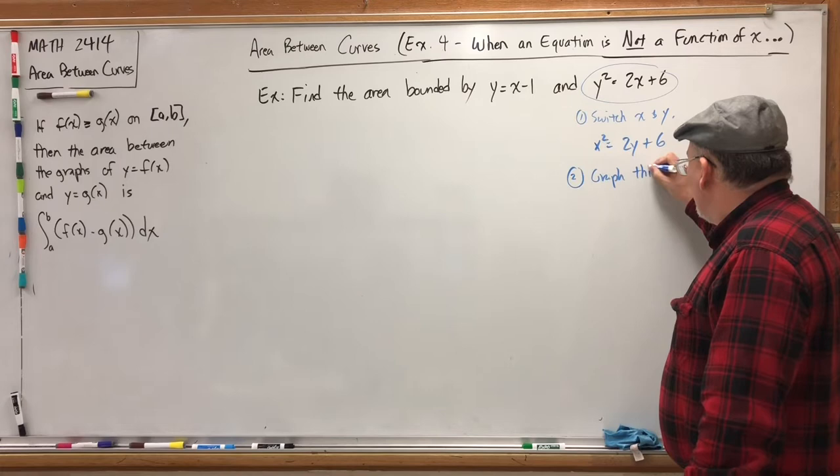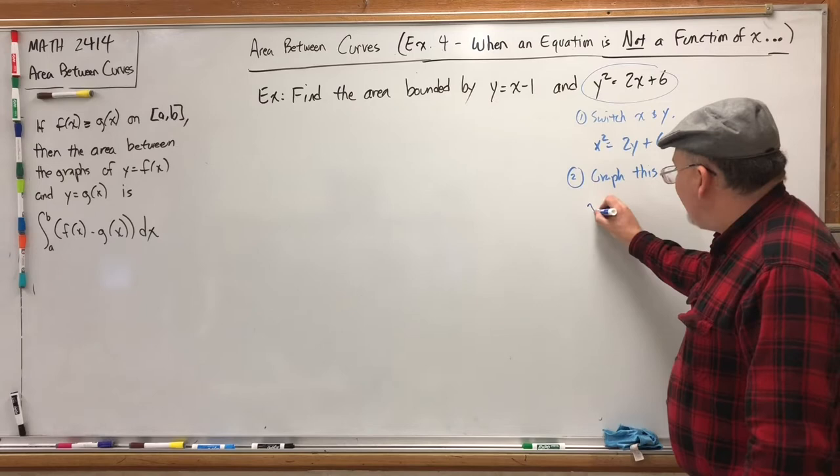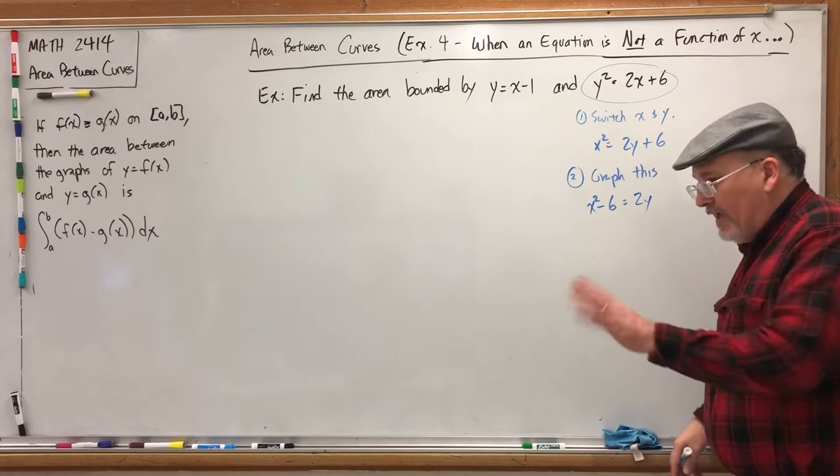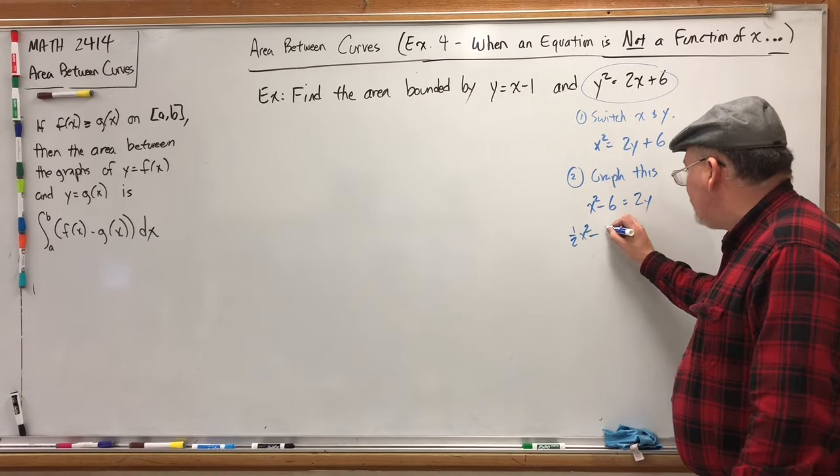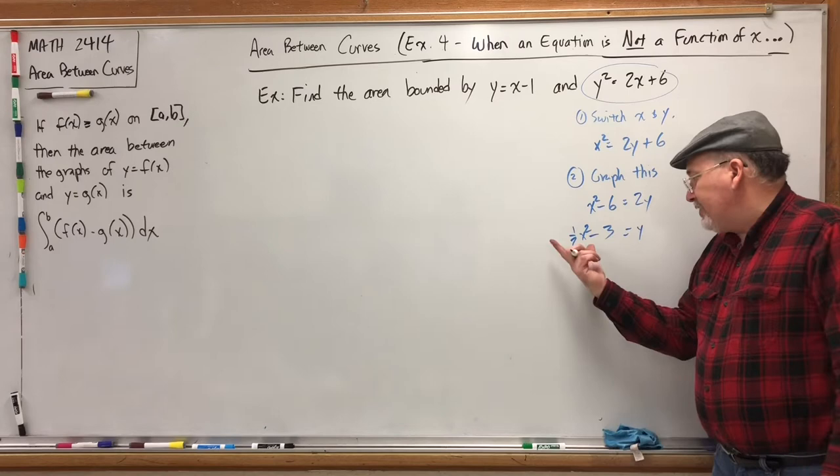Number one, switch the x and y. By definition, this is what gives us what's called an inverse relation. And there's a relationship between the graph of an equation and its inverse. But if we switch the x and y, we get x squared equals 2y plus 6. Graph this. Well, this we can get in a little bit more standard form by making it say y equals. If we subtract the 6 from both sides, we get x squared minus 6 equals 2y. And then multiply through by half, we get y equals 1 half x squared minus 3. And I know what this is. This is a parabola with a vertical compression of 1 half and move down 3.